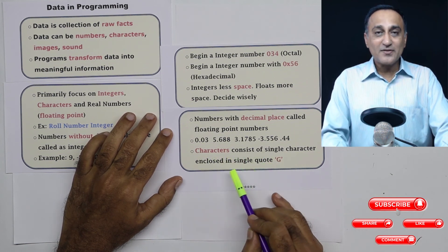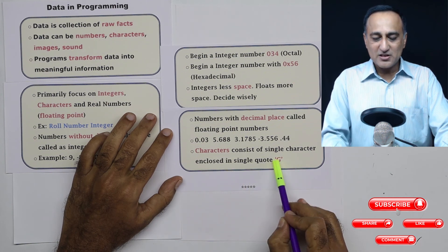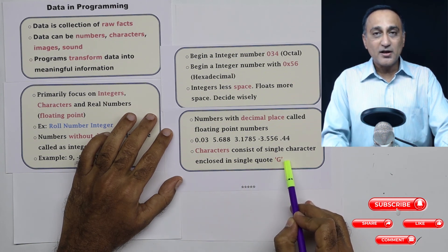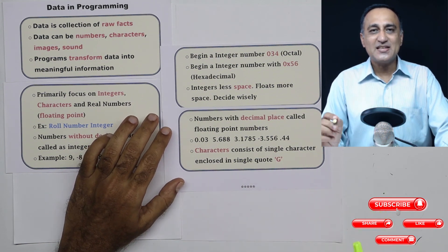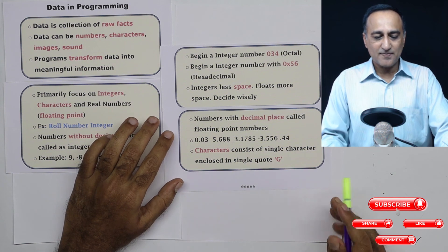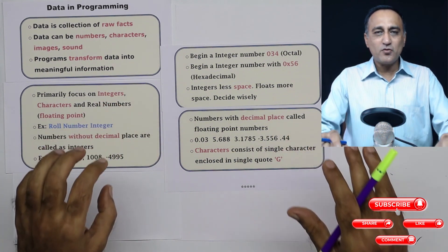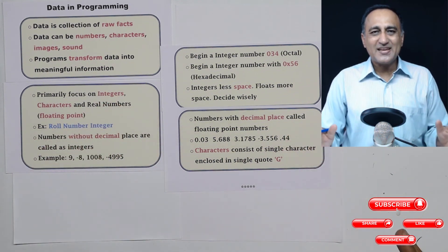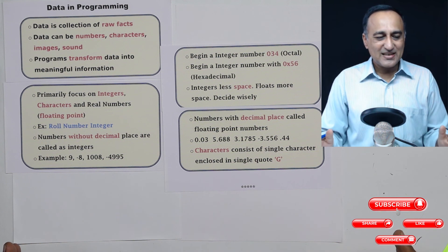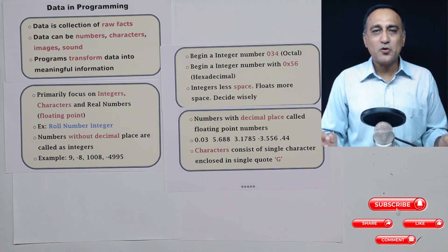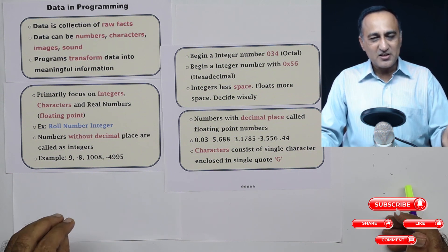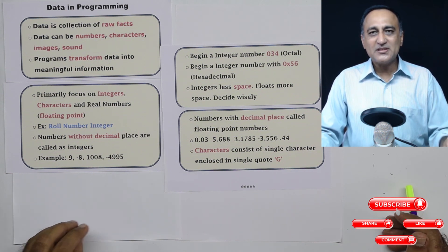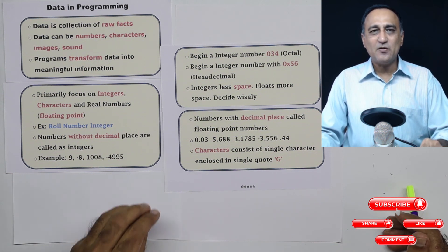Characters consist of a single character enclosed in single quotes. Do not enclose characters in double quotes — they mean something totally different; those are known as strings, which we will discuss later. This should give you an idea of what data is and its importance in programming. Our focus in C is going to be primarily on integers, real or floating point numbers, and character type data.